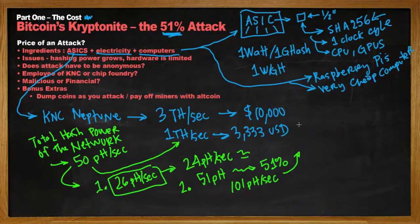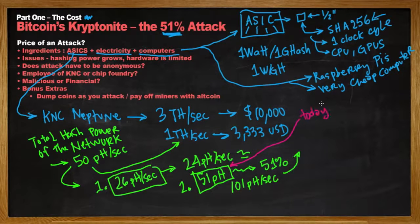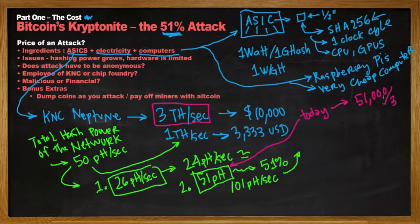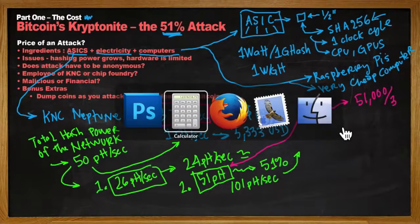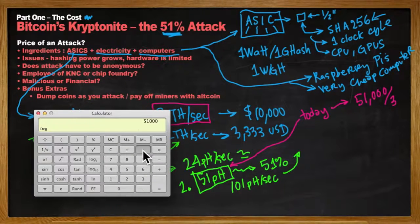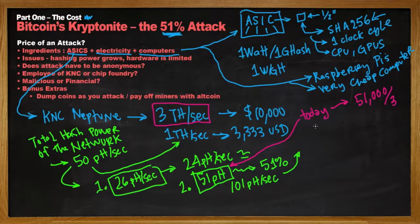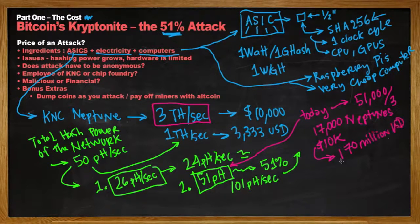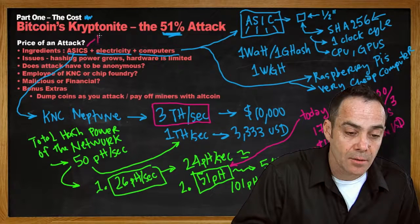To calculate our 51% attack for today, let us use the higher number and add 51 petahashes to the network. We figure out how many KNC Neptune miners — each doing 3 terahashes per second — we need to buy. That is 51,000 divided by 3, which equals 17,000 Neptunes. At $10,000 each, 10,000 times 17,000 gives you $170 million. So just to get the ASICs to run a 51% attack today, we would need $170 million.